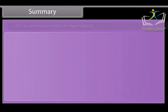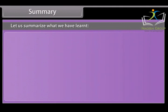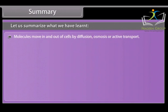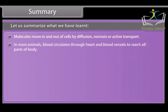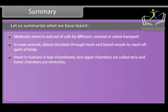Summary: Let us summarize what we have learned. Molecules move in and out of cells by diffusion, osmosis or active transport. In most animals blood circulates through heart and blood vessels to reach all parts of body. Heart in humans is four chambered, two upper chambers are called atria and lower chambers are ventricles.